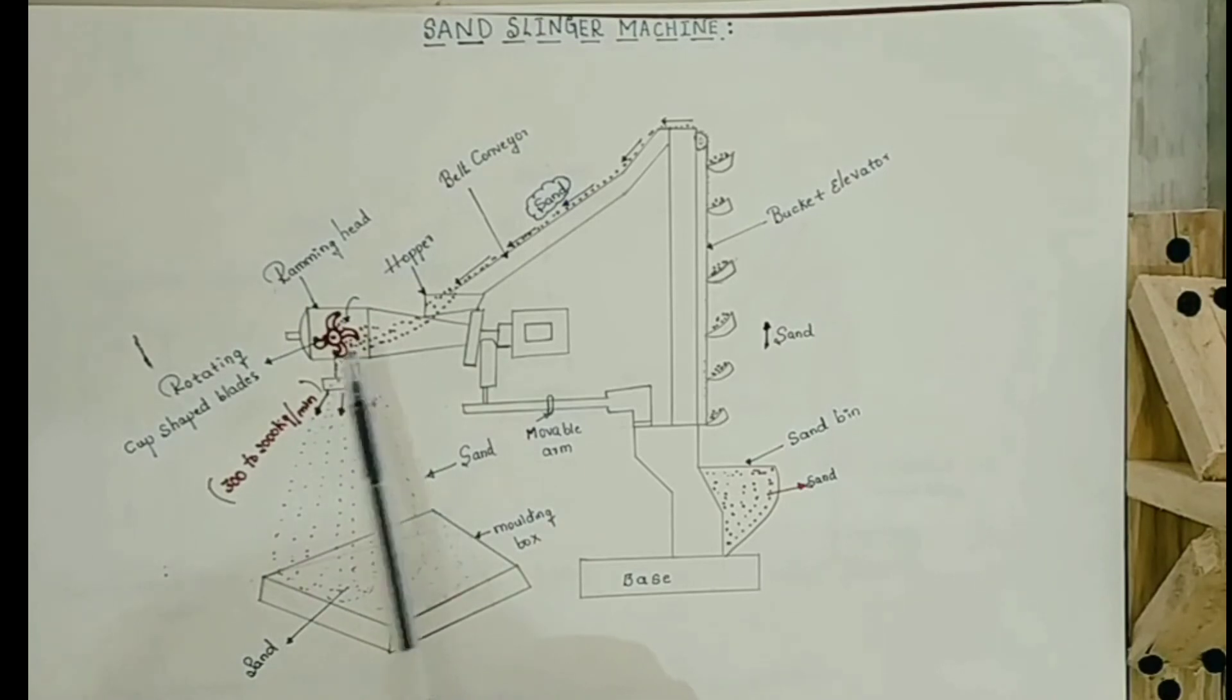Within that ramming head there is a rotating cup shaped blade. Then cup shaped blade holds the sand within the cup and it throws the sand in downward uniform direction with a speed of 300 to 2000 kg per minute. So much force is enough to ram the sand within the mould box.